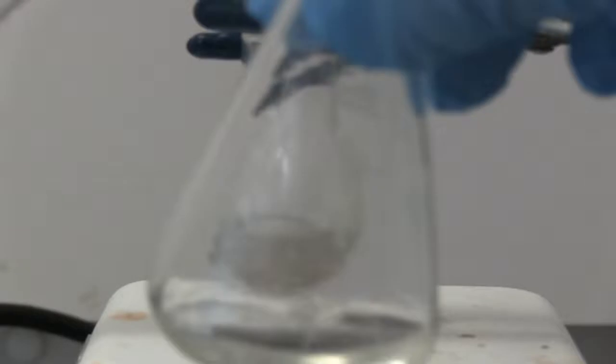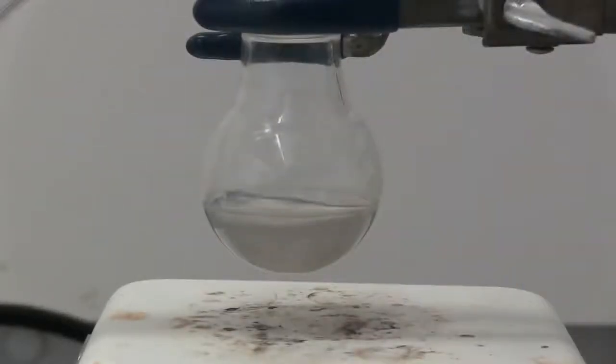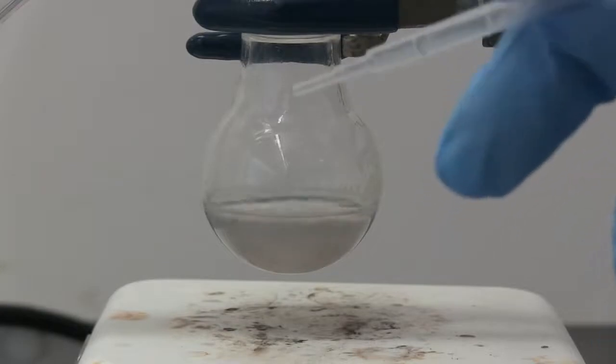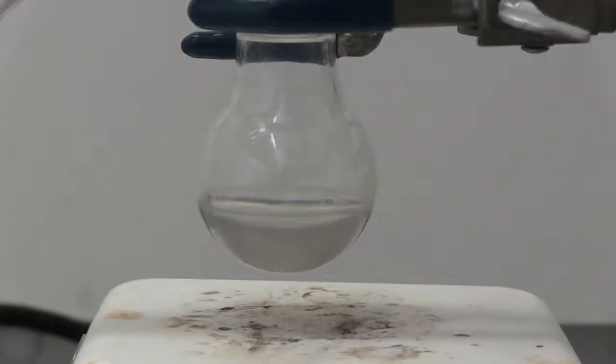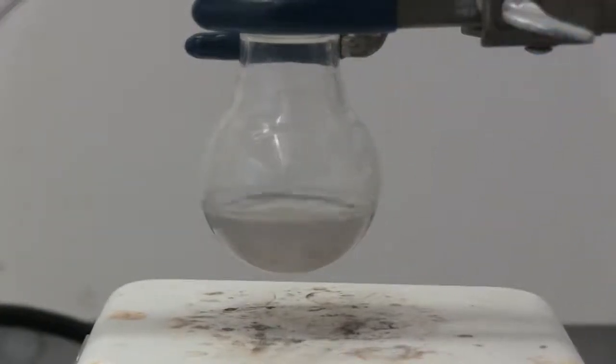All right, so here I have 255 milligrams of the benzoin dissolved in 5 mL of DCM. We're going to add it to the solution. Slowly, while stirring. We should get a reaction forming right away. We'll add on a water condenser and put the drying tube back on and then we'll begin our reflux.